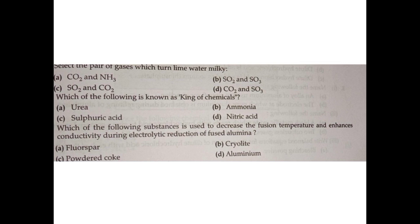Question number fifteen: which of the following substances is used to decrease the fusion temperature and enhance conductivity during electrolytic reduction of fused alumina? A) fluorspar, B) cryolite, C) powdered coke, D) aluminium. The correct answer is option B: cryolite.